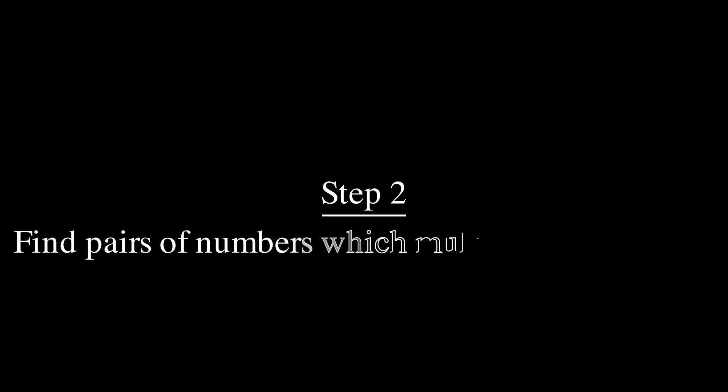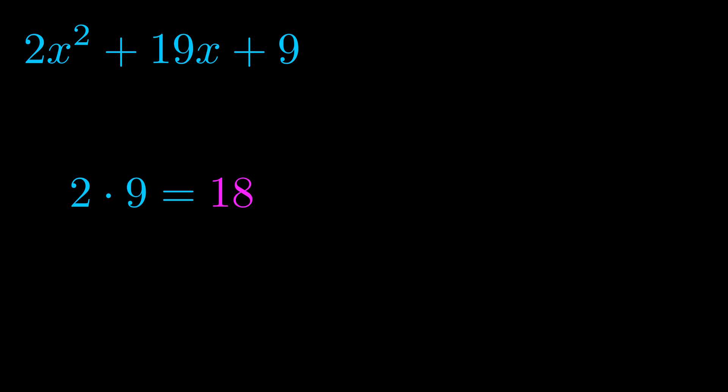Step two is to try to find all of the pairs which multiply to this number. Now it turns out you don't really need to find all of them, but go ahead and write down as many numbers as you can that multiply to the magenta value for now. Pause the video and resume when you're ready to continue. Okay, here's what I came up with.